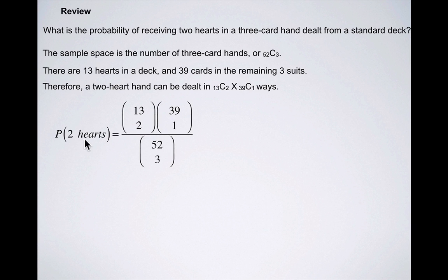When we look at the probability here, remember that probability of two hearts is the number of ways that something can occur divided by the number of possible outcomes.